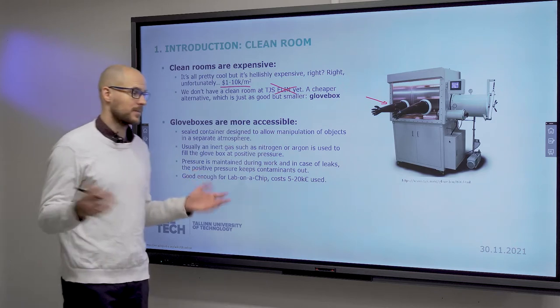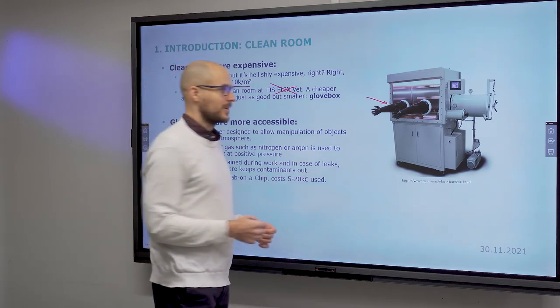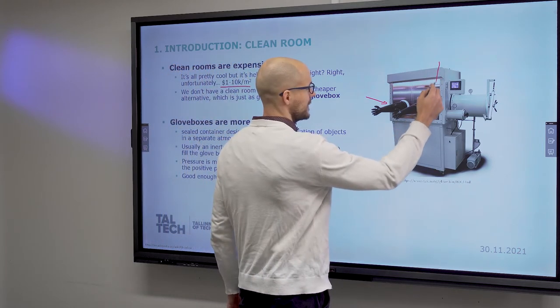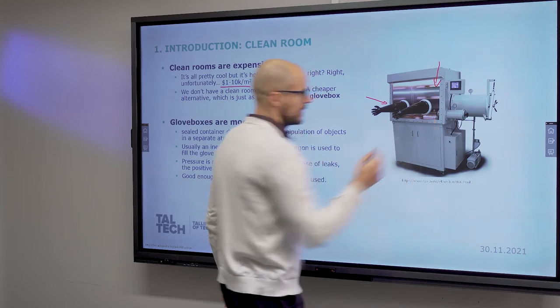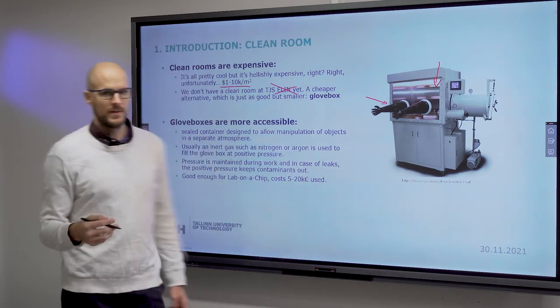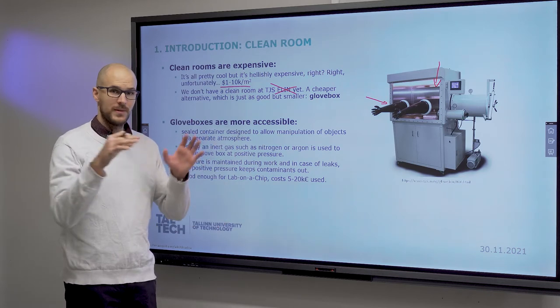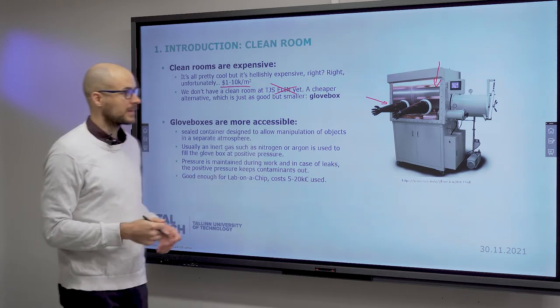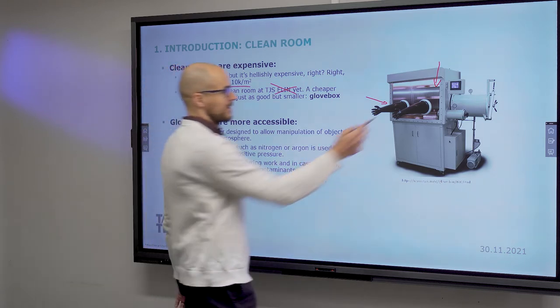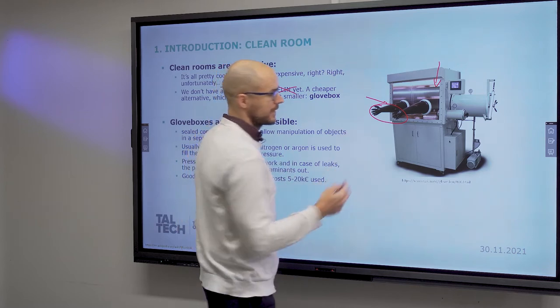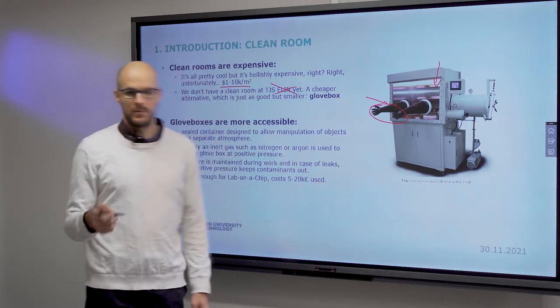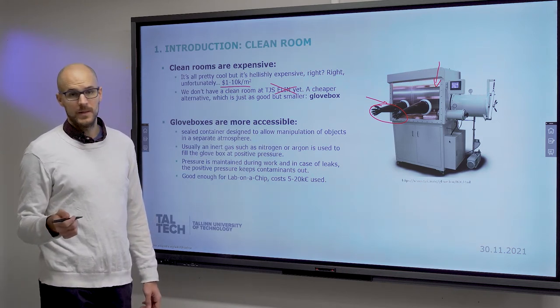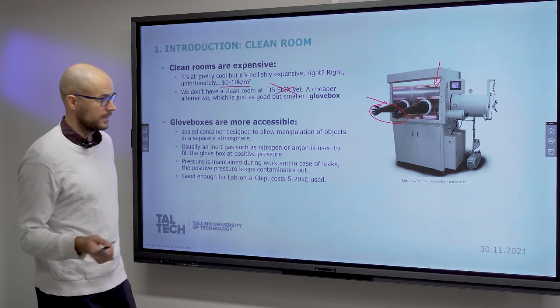So in a glove box, you have a positive pressure, which means the inside is kept at a high pressure. And that is to prevent dust from building up. So high pressure, if there's a leak anywhere, it goes out rather than being kept in. You can operate whatever is inside through gloves. And the pressure is maintained through a pressure regulator. It's usually with an inert gas, like nitrogen or argon.